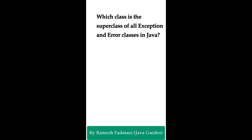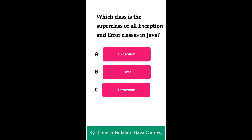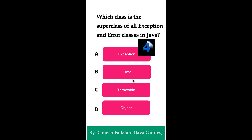Which class is the superclass of all exceptions and error classes in Java? Option A: Exception class. Option B: Error class. Option C: Throwable class. Option D: Object class. The correct answer is the Throwable class. In Java, the Throwable class is the superclass of all errors and exceptions. Both the Exception and Error classes are direct subclasses of Throwable. This design allows Java programmers to handle all kinds of errors and exceptions in a unified hierarchy.